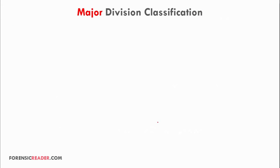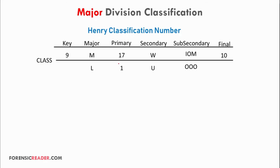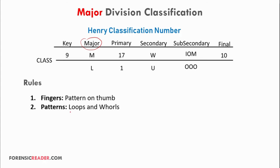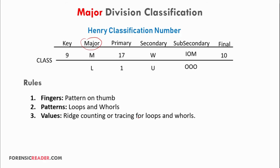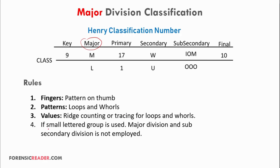Major division classification value sits between the key and primary in the Henry classification number. Rules: thumb finger patterns are used; pattern types are loops and whorls; ridge count or trace values for loops and whorls are used; if small letter grouping is used in secondary, both major and sub-secondary divisions are omitted.